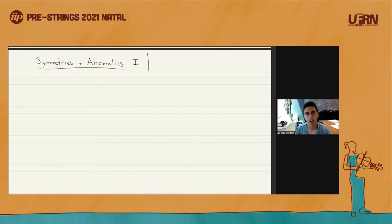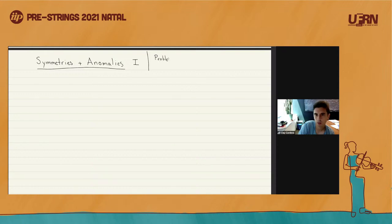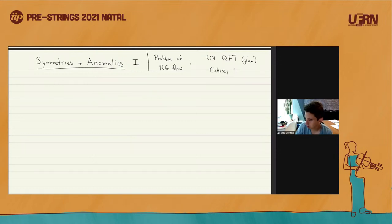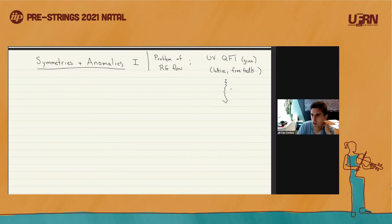Before getting into some of the details, I'd like to situate the problem that we'll be talking about. What we're going to be talking about, and the motivation, is this big problem in QFT: the problem of RG flow. Everyone is familiar with it at a cartoon level. We have some UV quantum field theory, and we take this as given. It comes in various varieties — for instance, it could be a lattice, some free fields with some interactions, maybe a strongly coupled CFT. And we'd like to ask what happens at long distances. We'd like to run the renormalization group and ask what's going on in the infrared.